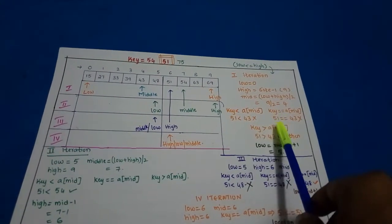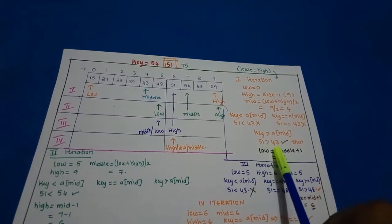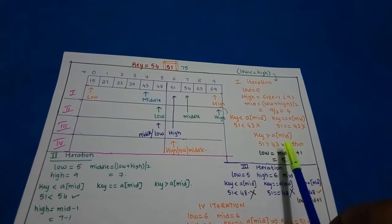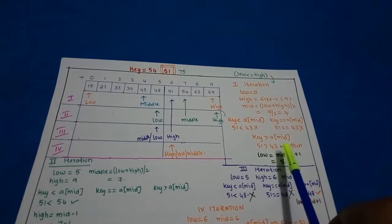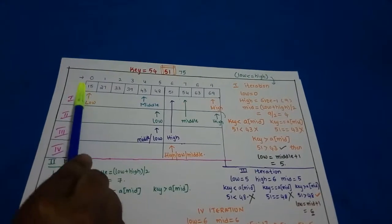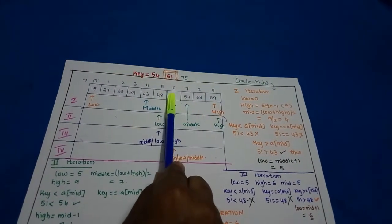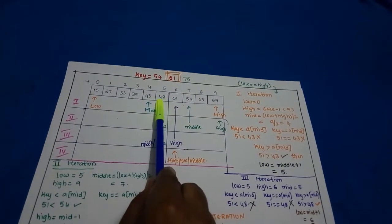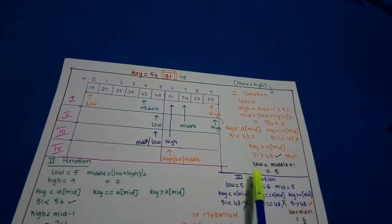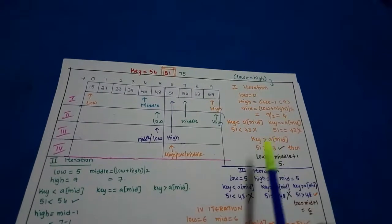Since key is not equal and not less than, that means it is greater than a[mid]. 51 > 43 is true. When 51 is greater than 43, we ignore the left part. So we need to change the low value: low = mid + 1, which gives low = 5. This is what we do in the first iteration.